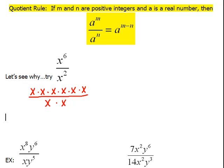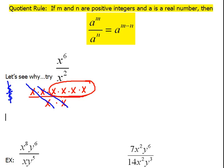If you'll remember from fraction rules, we can cancel out common factors on top and bottom. Because things like 5 over 5 — 5 divided by 5 is 1 — so when we cancel those, we're really dividing it out of both the numerator and the denominator. In this case, we have a common pair of x's on the top and bottom that we can cancel out, and then another common pair of x's on top and bottom we can cancel. So the only thing we have left are the x's on top — x multiplied by itself four times.